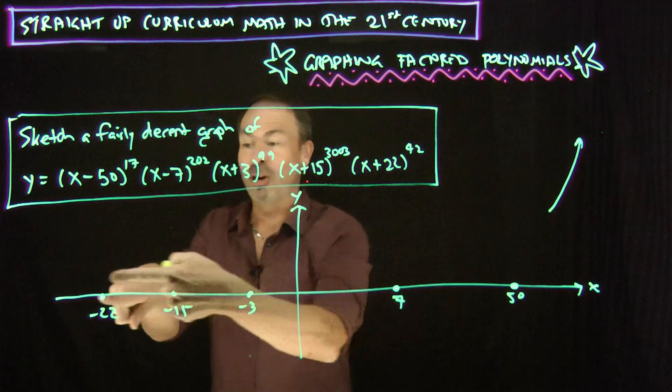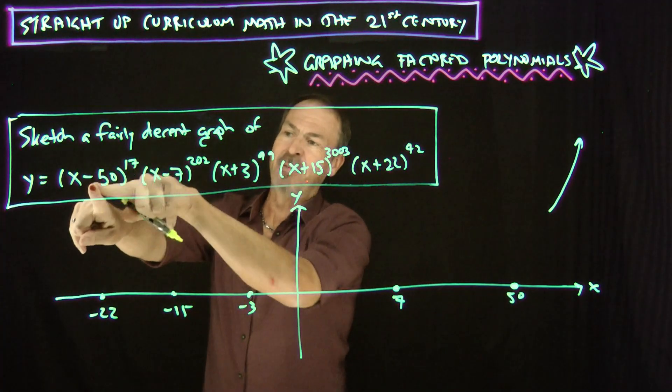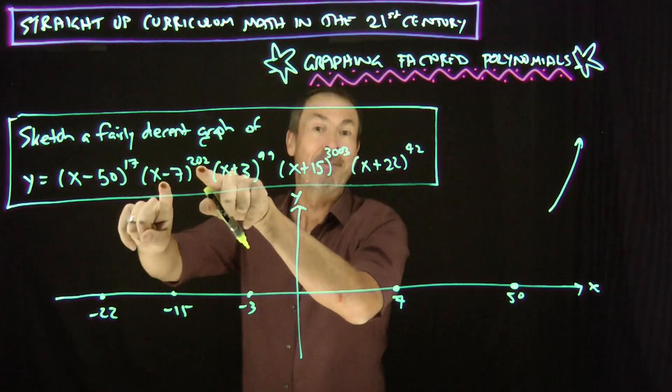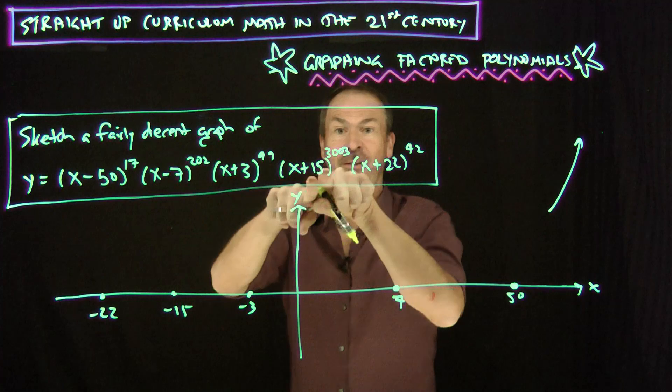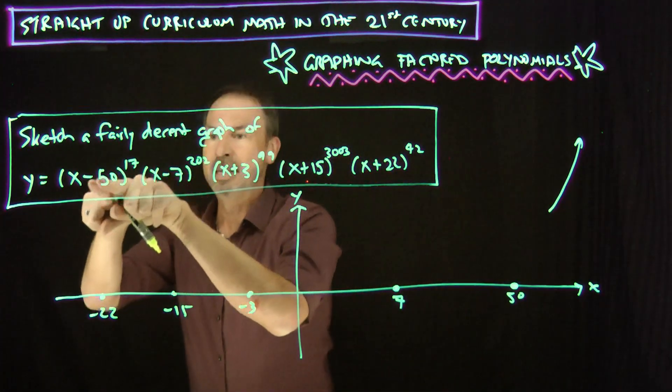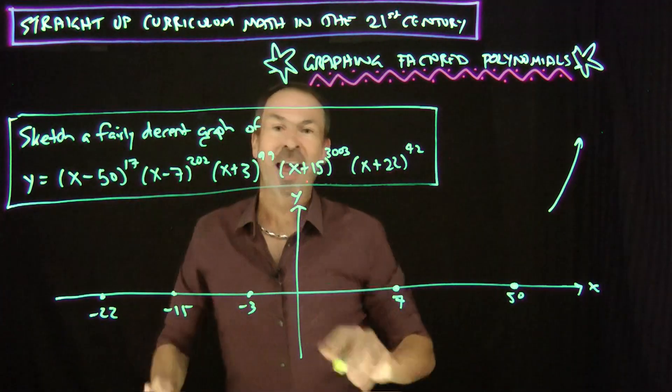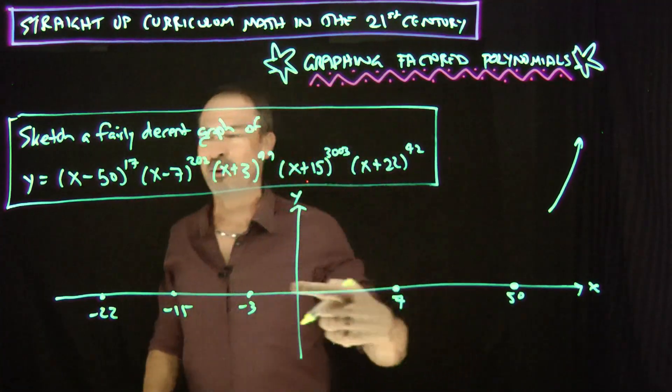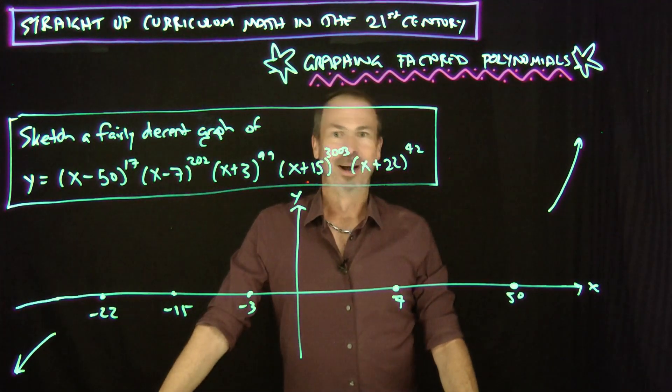I'm going to x to the other extreme, like a really huge negative value, like negative 10 billion. Negative 10 billion here would be a negative number to the 70th power. So it would be negative. Negative 10 billion here to an even power, 202 would be positive. Negative, positive, negative. Negative 10 billion basically to the 99th power is negative. This is also an odd exponent. Negative 10 billion to the 373 would be negative, positive. So it would be negative, positive, negative, negative, positive. That thing is negative. I bet if x is negative 10 billion, I'm going to get a really, really huge negative number coming out. So let's go to this other extreme. My graph must be becoming really huge and negative.